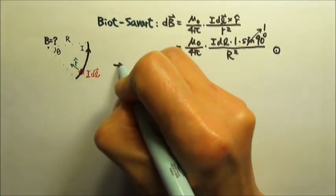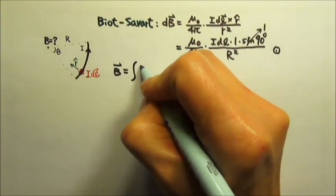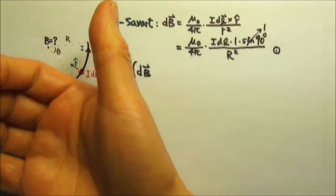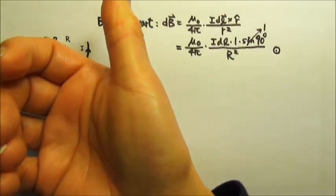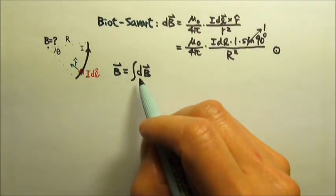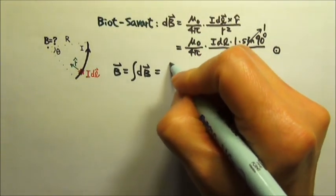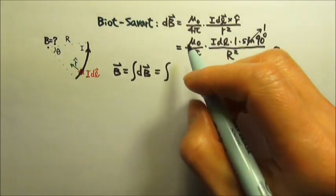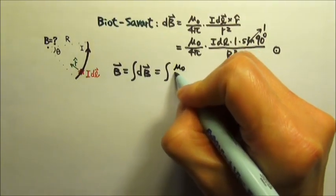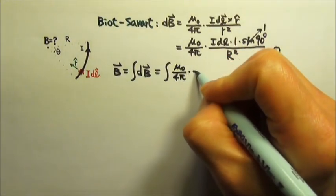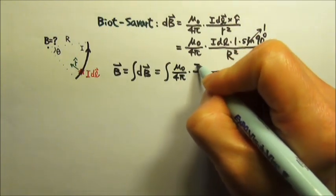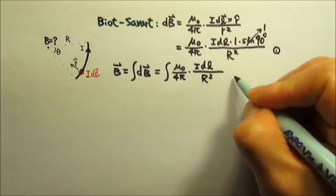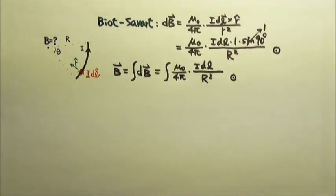To find the magnetic field, we will have to integrate all the dB. Because the dB produced by every segment of the current points out of the paper, to integrate dB the vector, we just have to integrate dB the magnitude, because all the dBs have the same direction. So we have the integral of mu naught over 4π times I dL times 1 times 1 divided by R squared. And they all have the same direction out of the paper.